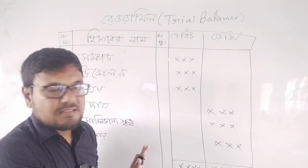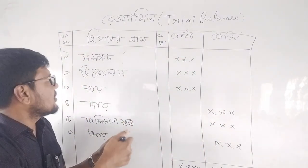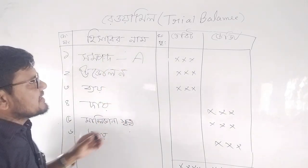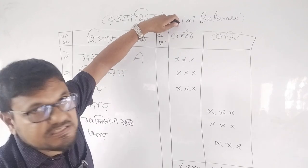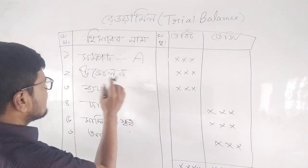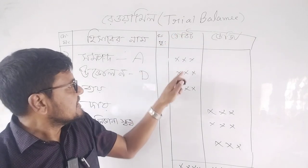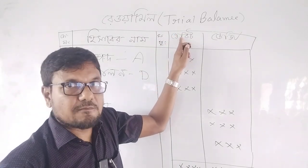This is called trial balance. The trial balance has a debit side. Assets will be included in the debit side of trial balance, and drawings will be included in the debit side of trial balance.